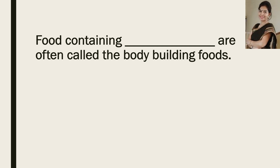Now the next question: food containing DASH are often called the bodybuilding foods. You have to name the nutrient. Your time is over and the answer is proteins.